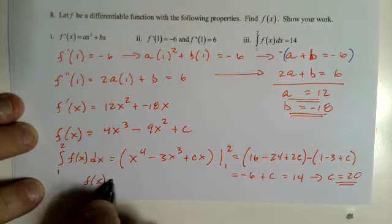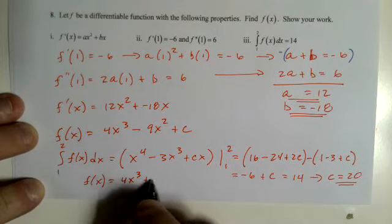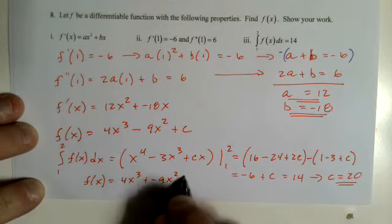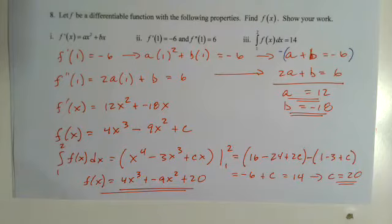f of x equals 4x to the third, plus negative 9x squared, plus 20. Woo! Working for 11.